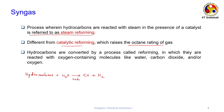Hydrocarbons are converted by a process called reforming in which they are reacted with oxygen-containing molecules like water, carbon dioxide, and/or oxygen. Hydrocarbons themselves have no oxygen, so oxygen is provided either from oxygen gas or from steam. If you add more steam, you will have more hydrogen in your syngas. If you add more oxygen, you will have more oxygen-containing species. You decide based upon your application.